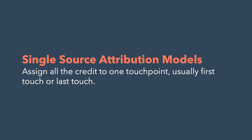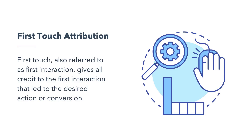Single-source attribution models assign all the credit to one touch point, usually first touch or last touch. First touch, also referred to as first interaction, gives all credit to the first interaction that led to the desired action or conversion. This is a great model to choose if you're curious about the content or channel that is initially bringing visitors to your site.